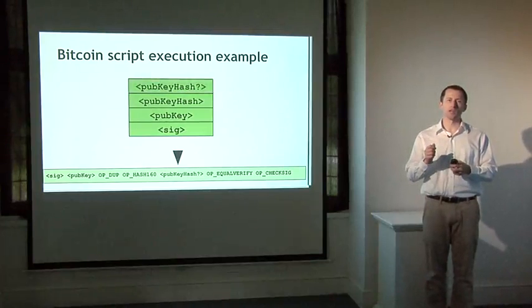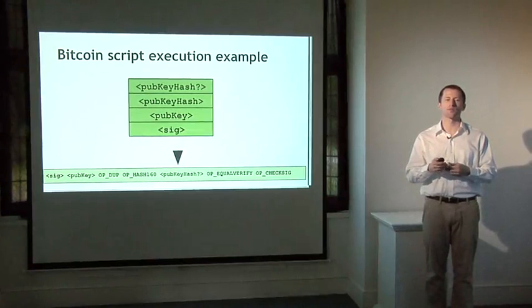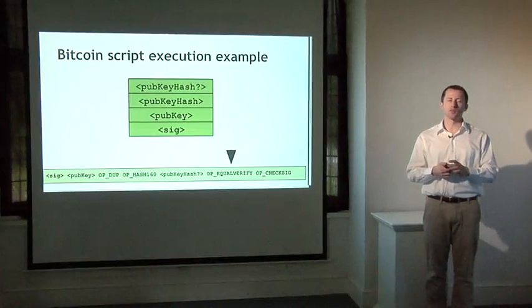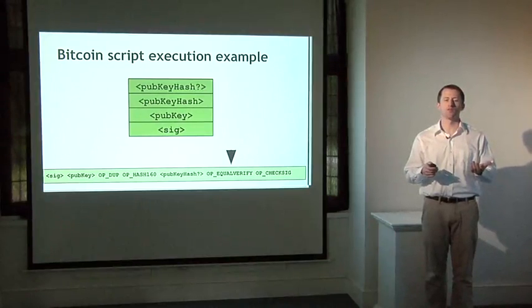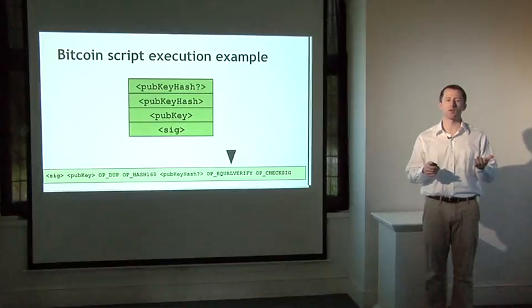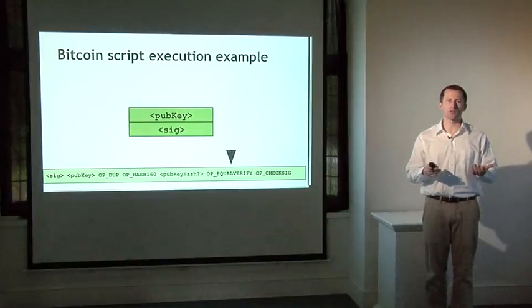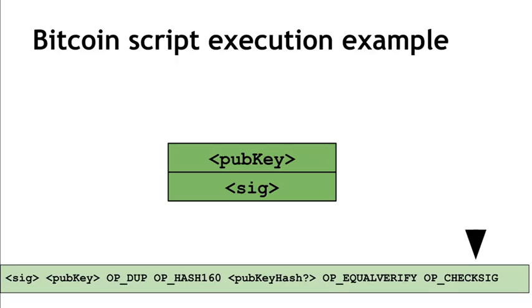Now at the top of the stack we have two values: the hash of the public key as specified by the sender, and the hash of the public key actually used by the recipient when trying to claim the coins. The EQUALVERIFY command checks whether the two values at the top of the stack are equal — if they aren't, an error is thrown and the script stops. That instruction consumes those two data items, leaving a signature and a public key on the stack. Now we want to check that the signature is actually valid — there's one instruction that lets you verify a signature, and signature verification is built right into the Bitcoin scripting language.